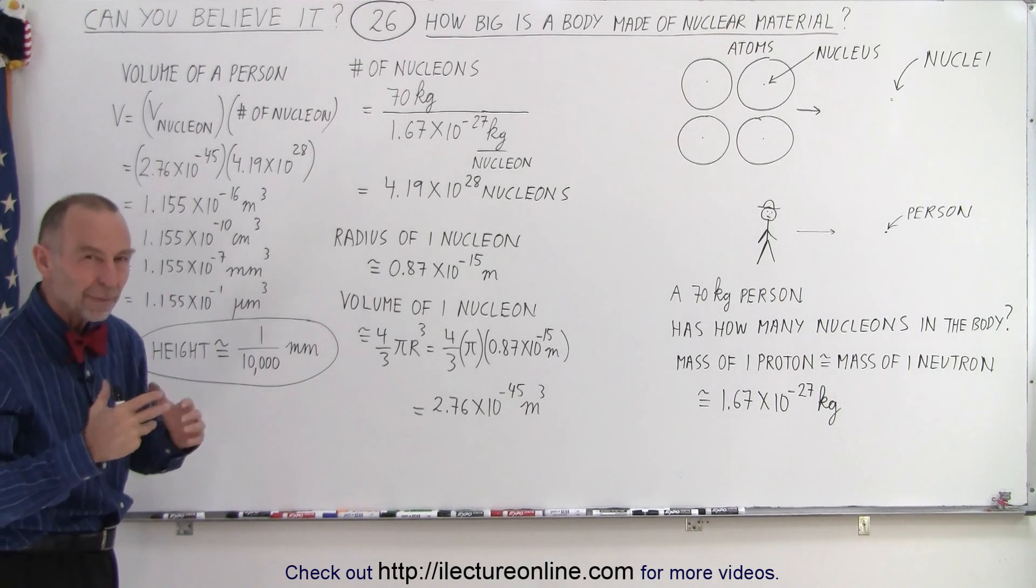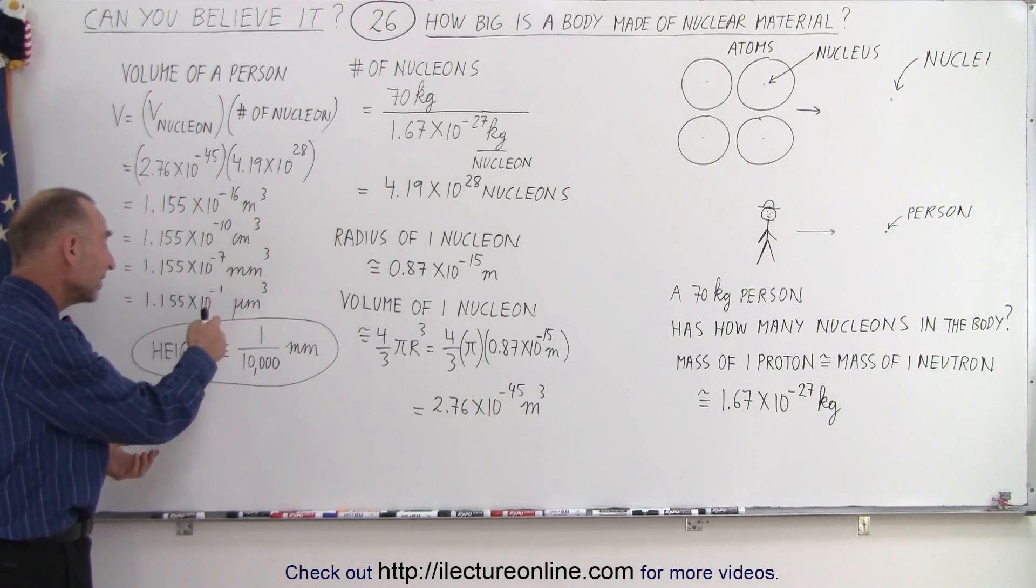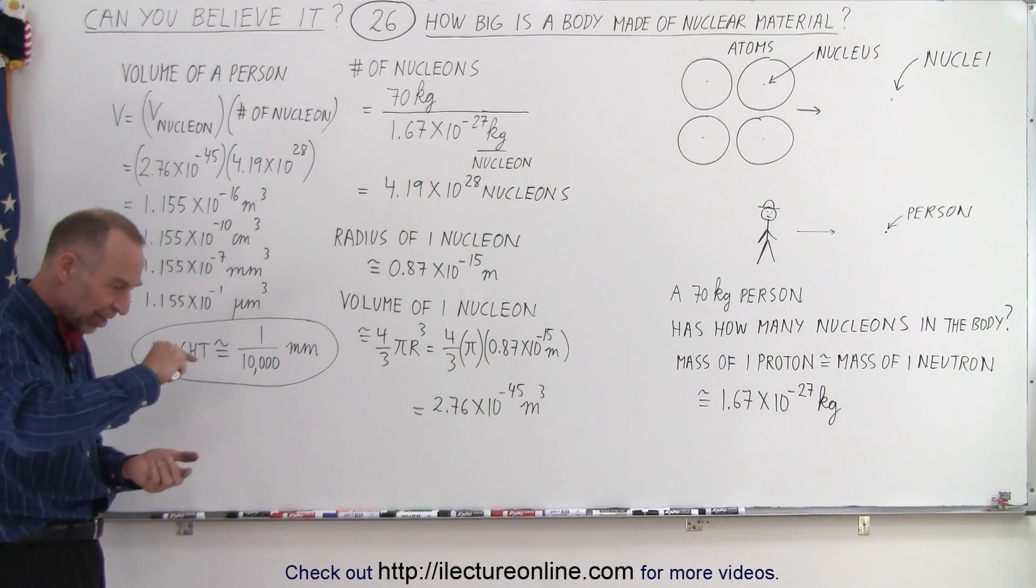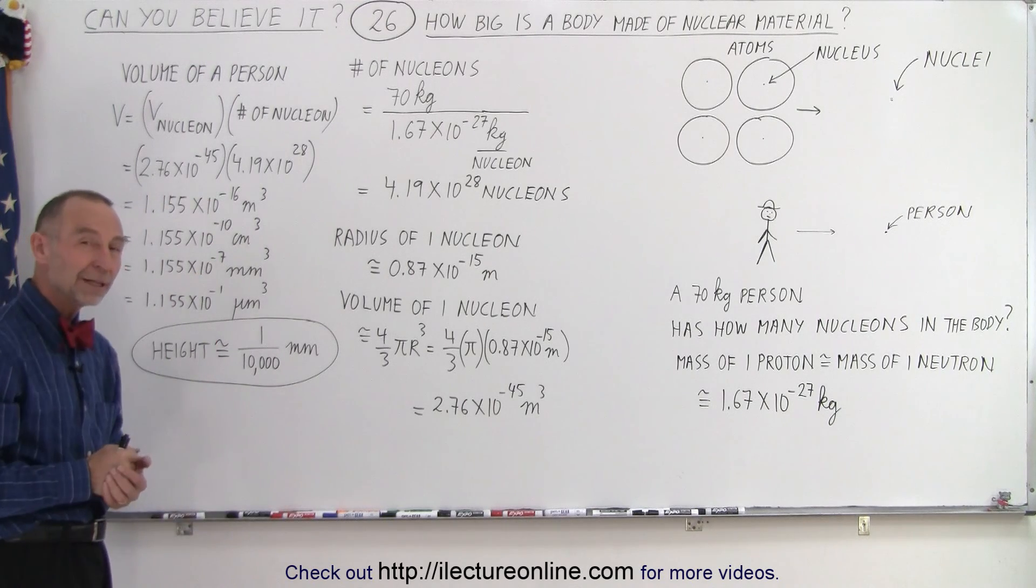And then if we try to estimate the height of a person at that volume, the height would be about 1/1000 of a millimeter. You would have to stack up 10,000 people on top of one another to make a length of 1 millimeter.